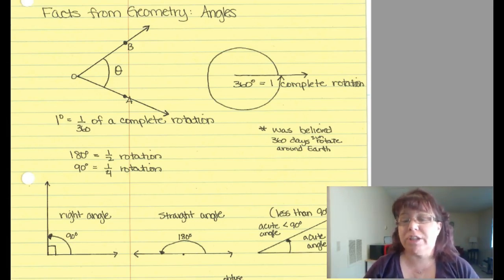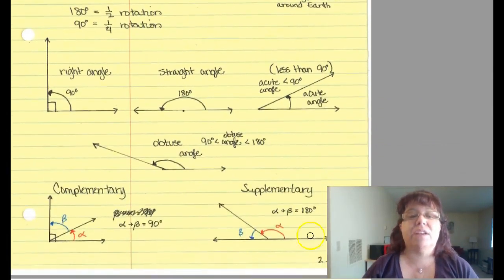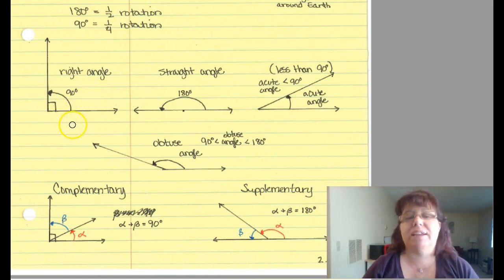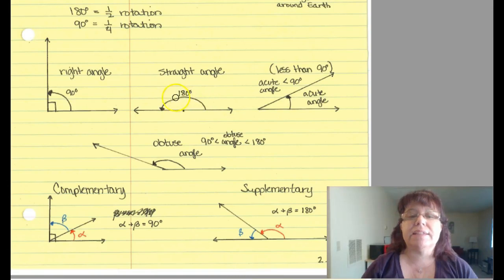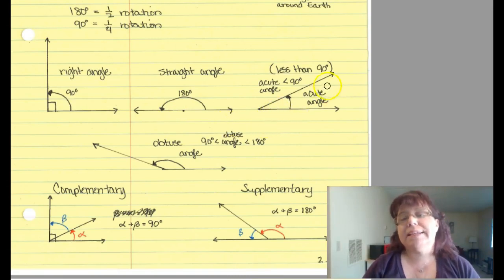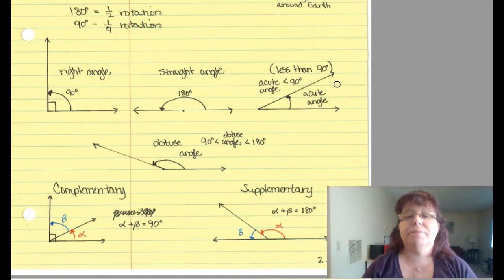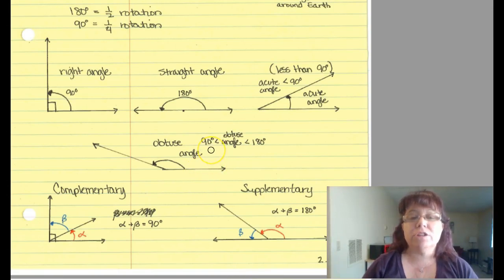We have nice terminology for specific angles. A 90-degree angle is a right angle and will always have a little square in the corner. A straight angle is 180 degrees — it's halfway around the circle. If your angle is less than 90 degrees, it is an acute angle. If the angle is larger than 90 but less than 180, then it is an obtuse angle. Those are the different types of angles we work with.